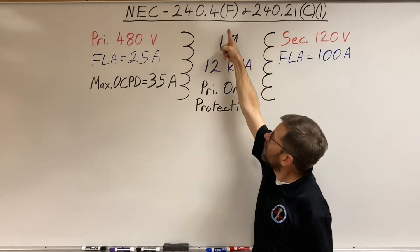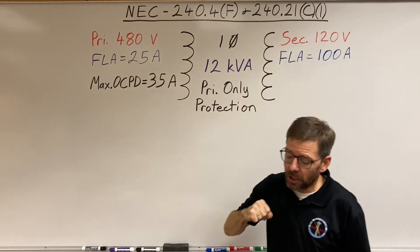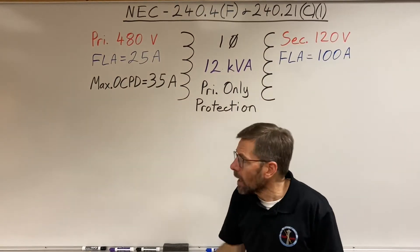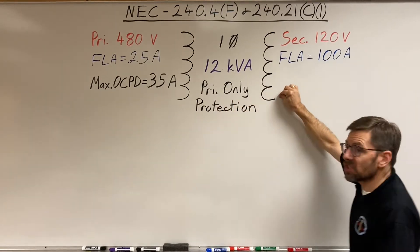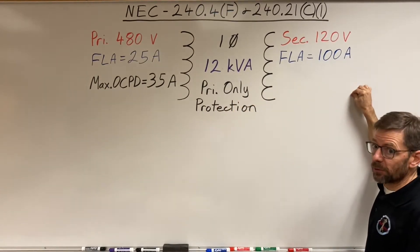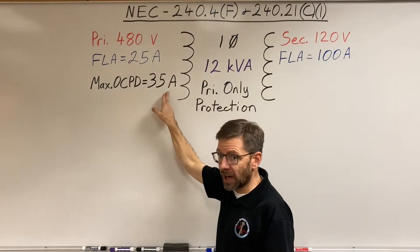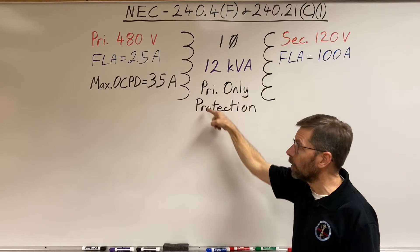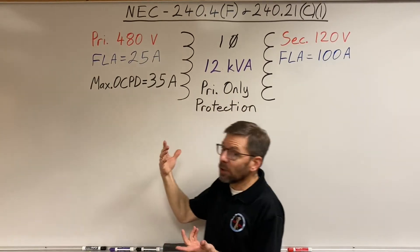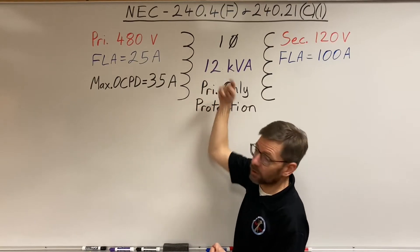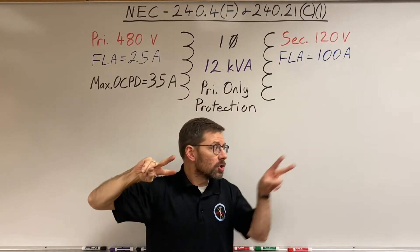So in F and C1, they do the same thing pretty much. What it really tells me is that the only time I can protect a secondary conductor of a transformer with the primary overcurrent device, that means using primary only protection, is when I have a single phase transformer, but it's got to be limited to two wires in and two wires out.